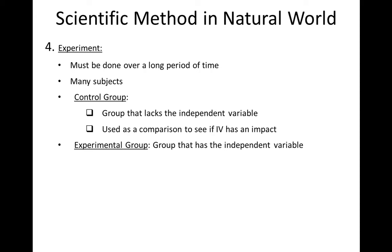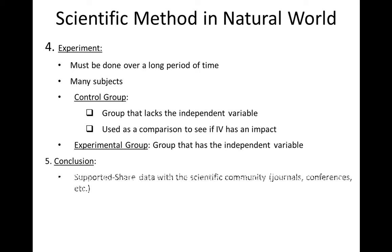So it's a use of comparison. The experimental group has the independent variable. While doing your experiment, you have multiple subjects for a long duration of time, and you make everything exactly the same in both groups except where the independent variable is lacking in the control. After your experiment is over, you can draw conclusions and share your supported data with the scientific community. You also have to share your data if it doesn't match. Whether your results support or go against your hypothesis, it's really important to share so other people can learn from your experiments.